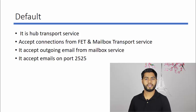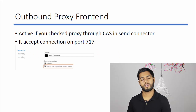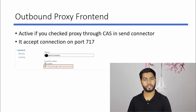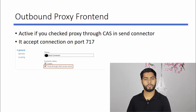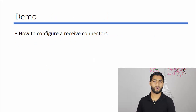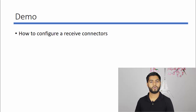Next is Outbound Proxy Front End. If you have configured your send connector to send emails through the client access server, the Front End Service will listen for SMTP connections on port 717 with this receive connector. That covers all the receive connectors in Exchange Server. Now let us see a demo on how to configure a receive connector in Exchange Server.